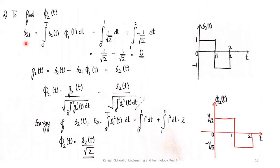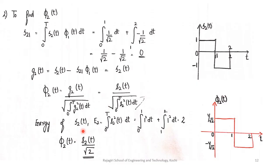Proceeding to Step 2, our aim is to find φ2(t). We find the projection of the second signal on the first basis function: s21 = ∫₀ᵀ s2(t) · φ1(t) dt = 0. So the intermediate function g2(t) = s2(t) − s21 · φ1(t) = s2(t). Therefore φ2(t) = s2(t) / √E[s2]. The energy of s2(t) equals 2, so φ2(t) = s2(t) / √2, giving amplitude 1/√2 with the same shape as s2(t).